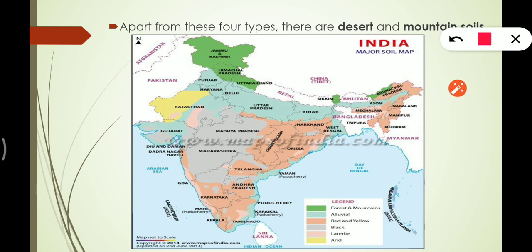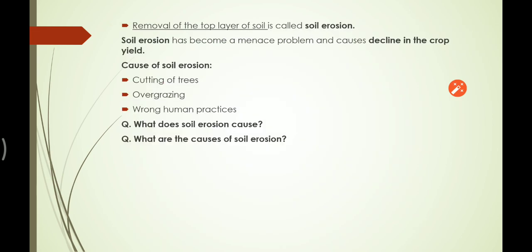Laterite soil is found in patches in Rajasthan, Goa, Karnataka, a few parts of Kerala, and Tamil Nadu. Arid land, shown in yellow on the map, is found in Rajasthan near the desert region.